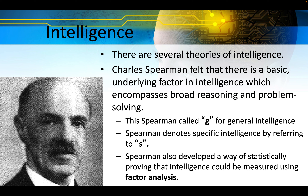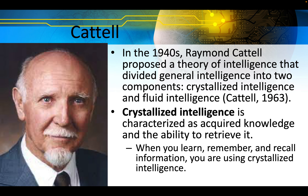There are several theories of intelligence. Charles Spearman felt that there is a basic underlying factor in intelligence which encompasses broad reasoning and problem solving — this Spearman called G for General Intelligence. Spearman denotes specific intelligence by referring to S. Spearman also developed a way of statistically proving that intelligence could be measured using factor analysis. In the 1940s, Raymond Cattell proposed a theory that divided general intelligence into two components: crystallized intelligence and fluid intelligence.